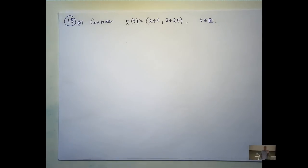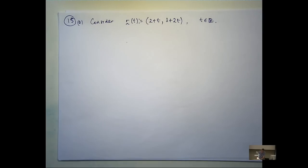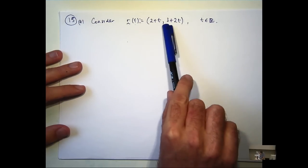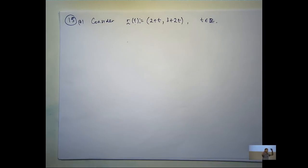All right, so can anyone suggest what the curve associated with that vector function might be? A line. How did you get that? Okay, so plugging in values of t can sometimes be handy, maybe not all the time. What about a more universal method? That's another way. So I could say: let x equals 2 plus t, let y equal 3 plus 2t, and then eliminate the t, right? Anybody know another way?